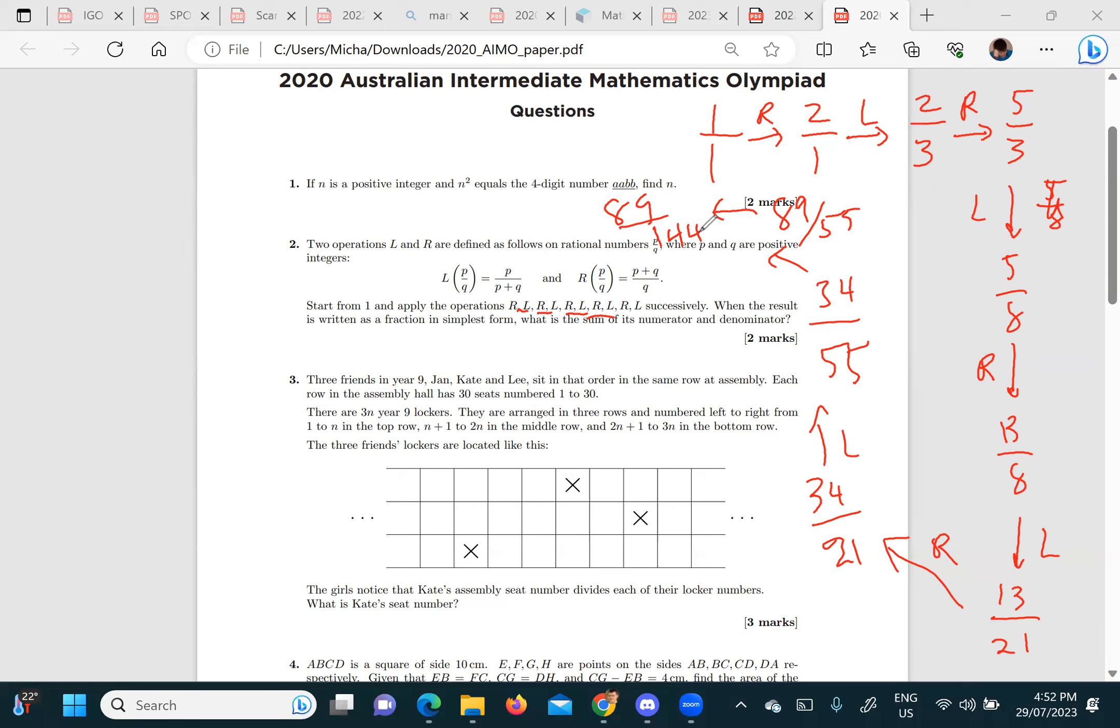It actually preserves co-primeness, these operations. So then you don't have to cancel or anything or think about canceling. So if it's 89 over 144, then it should be like 233.